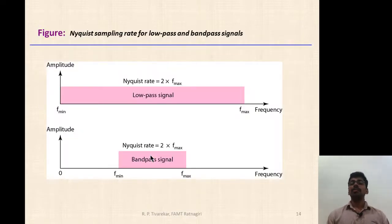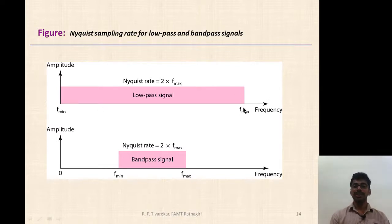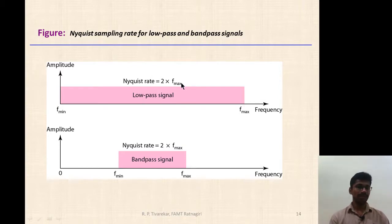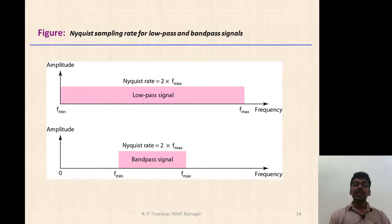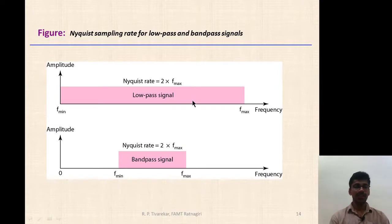For a low-pass signal with maximum frequency f_max, the Nyquist rate is equal to 2·f_max — that is the minimum sampling rate required. A band-pass signal has minimum frequency f_min and maximum frequency f_max. If we want to sample this signal, the Nyquist rate — the minimum sampling rate — should also be equal to 2·f_max. The Nyquist rate is totally dependent on the maximum frequency component present in a signal and is independent of the bandwidth of the signal.